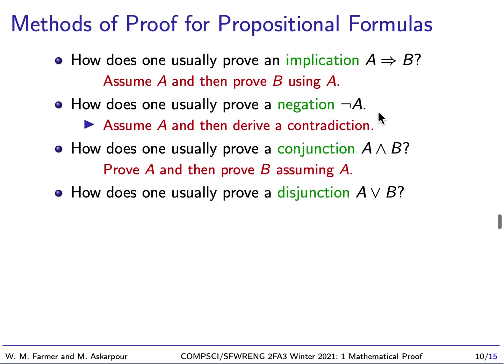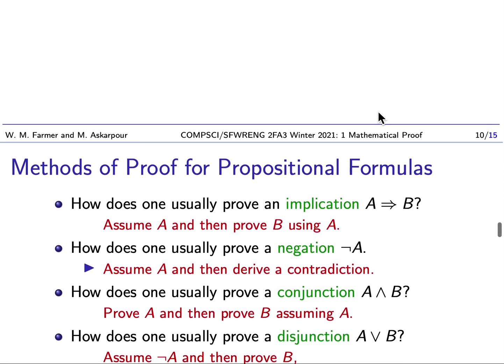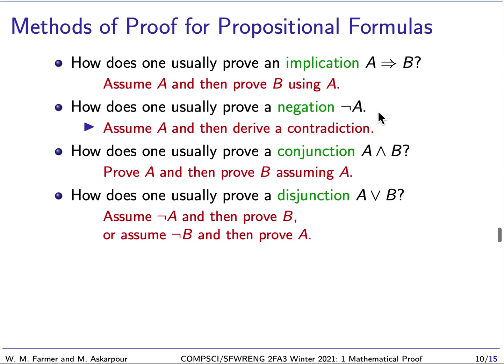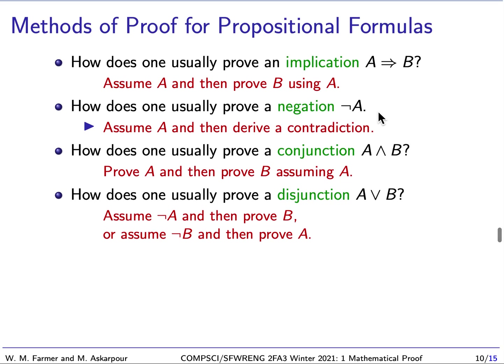Okay, what about a disjunction? The disjunction is A or B. Here we have to show that A is true, or that B is true. So this is normally how you would do it. We assume that A is not true, and then prove B. Or we assume that B is not true, and then prove A.